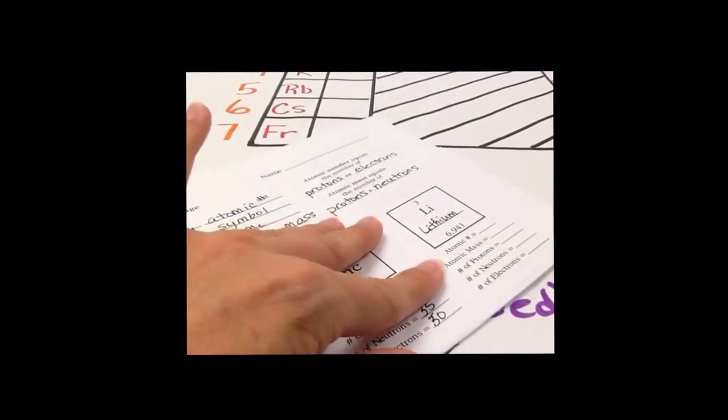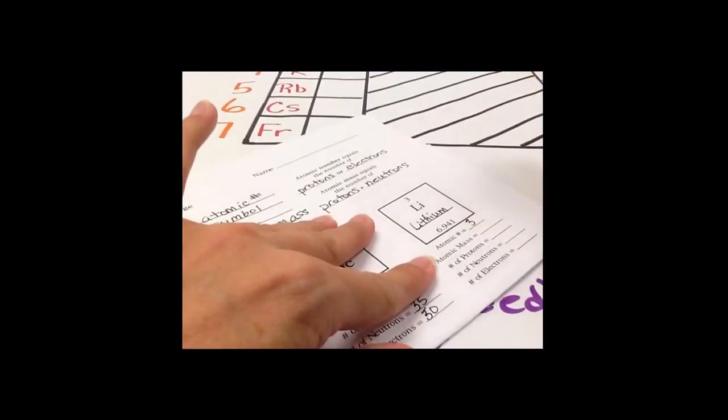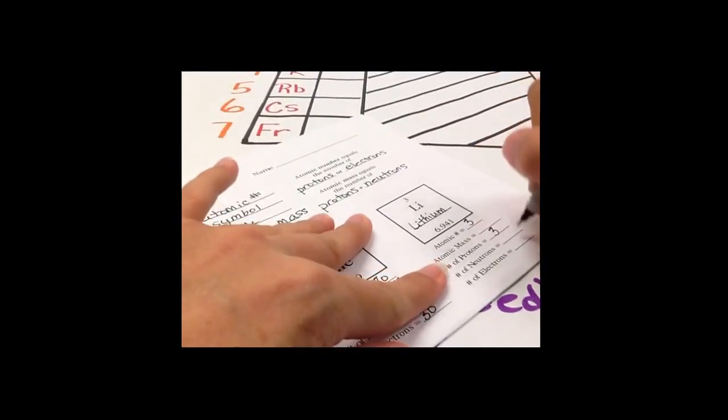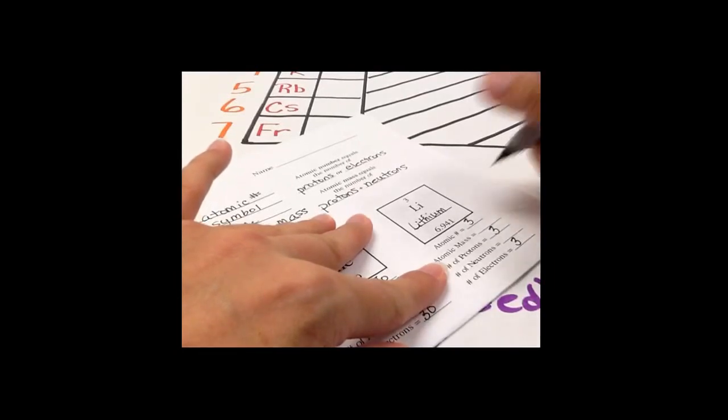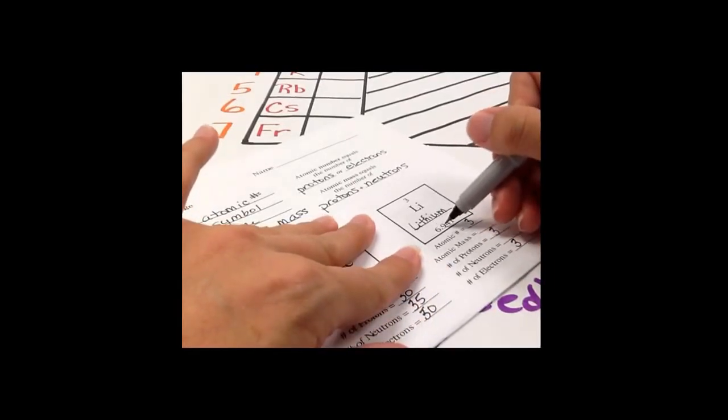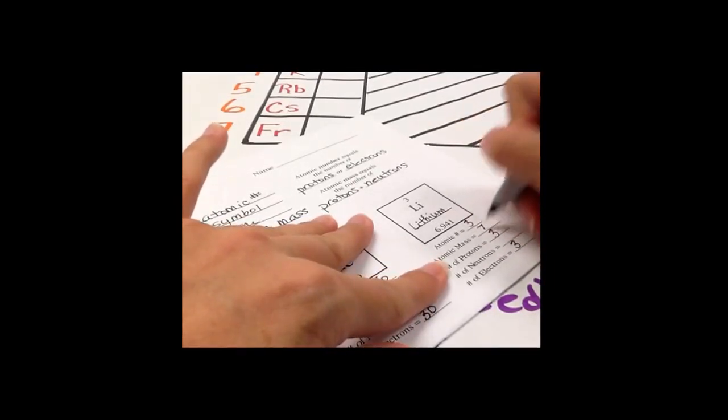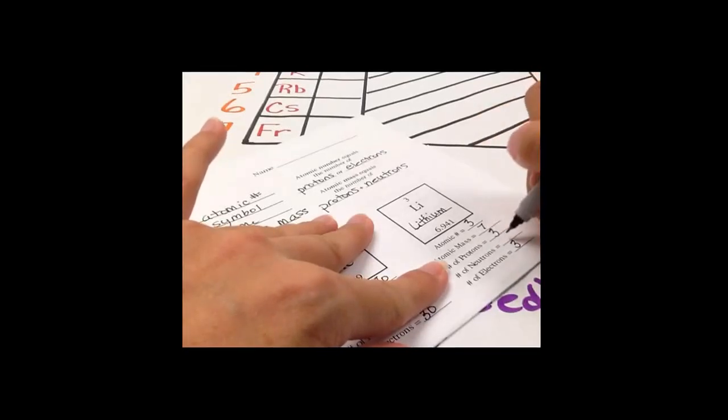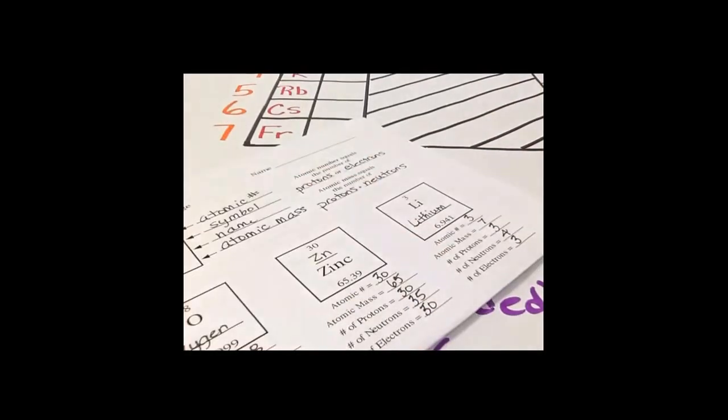Lithium, the atomic number is 3, so therefore I have 3 protons, 3 electrons. My atomic mass is 6.9, that will round to 7. The atomic mass minus protons equals 4 neutrons.